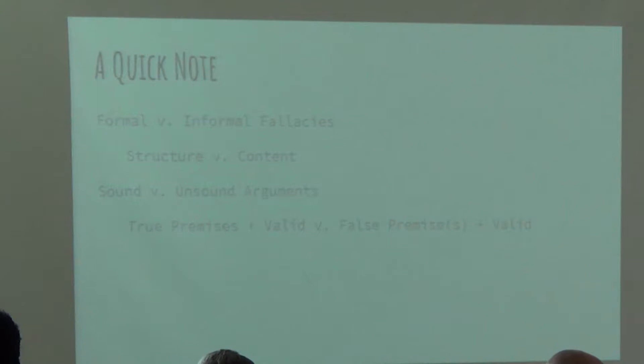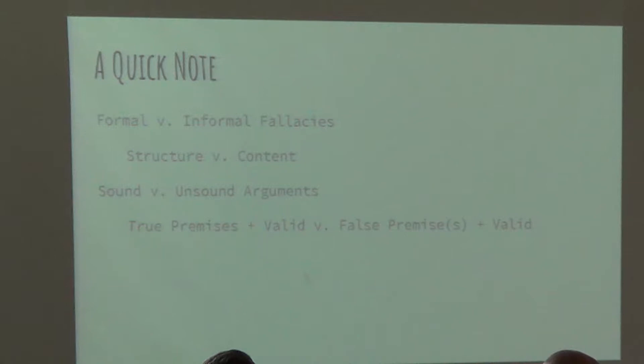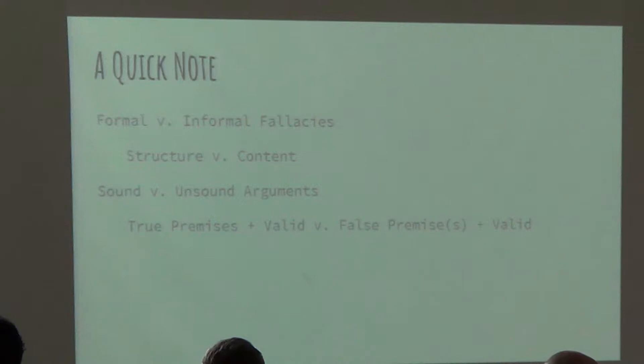There are different structures. This is really a 30-minute lecture, so it's going to be 10 minutes — we're just going to slice it in half. So: formal versus informal fallacies. We're going to concentrate primarily on informal fallacies. A formal fallacy is a structural problem. An informal fallacy is a content problem. A sound argument is both true and has valid structure. An unsound argument has false premises — it can have valid structure, but it's still unsound.